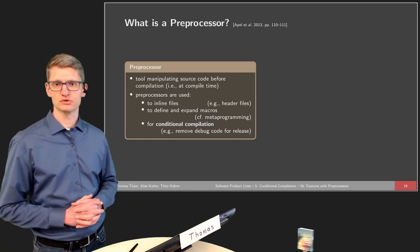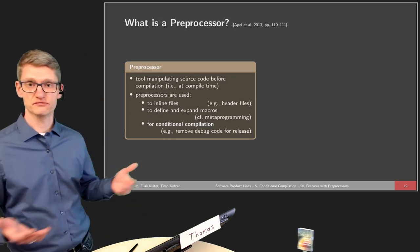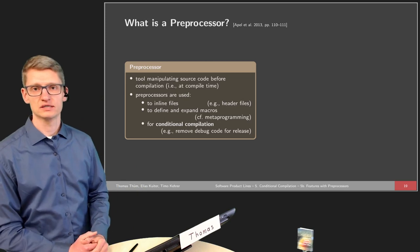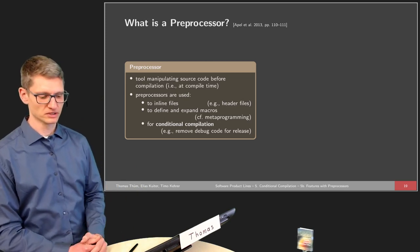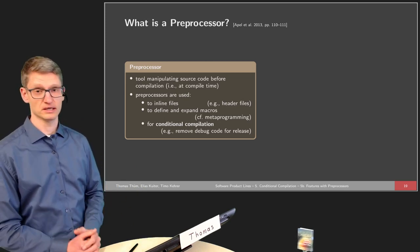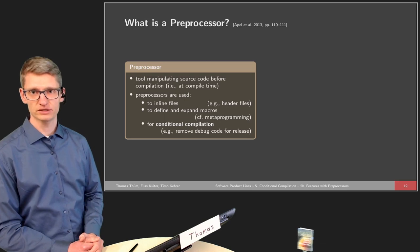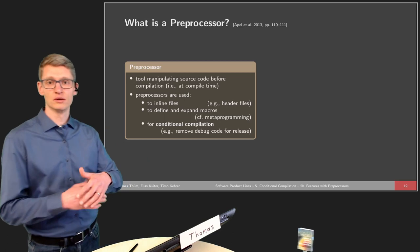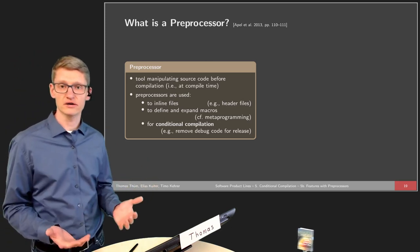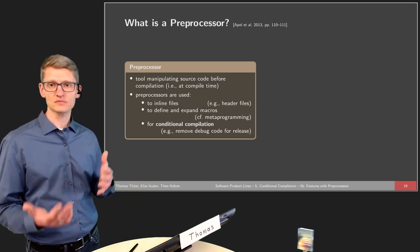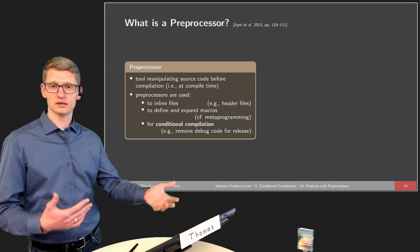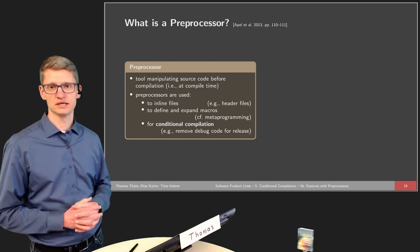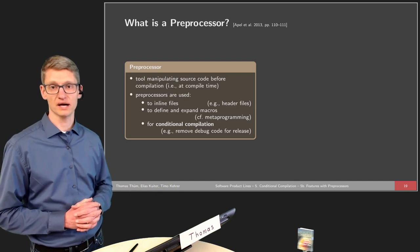We will now look into preprocessors. Preprocessors fill this gap and allow fine-grained variability by manipulating the source code before compilation — that's why they're called preprocessors. 'Pre' stands for prior to: it is a text processing step prior to the compiler.